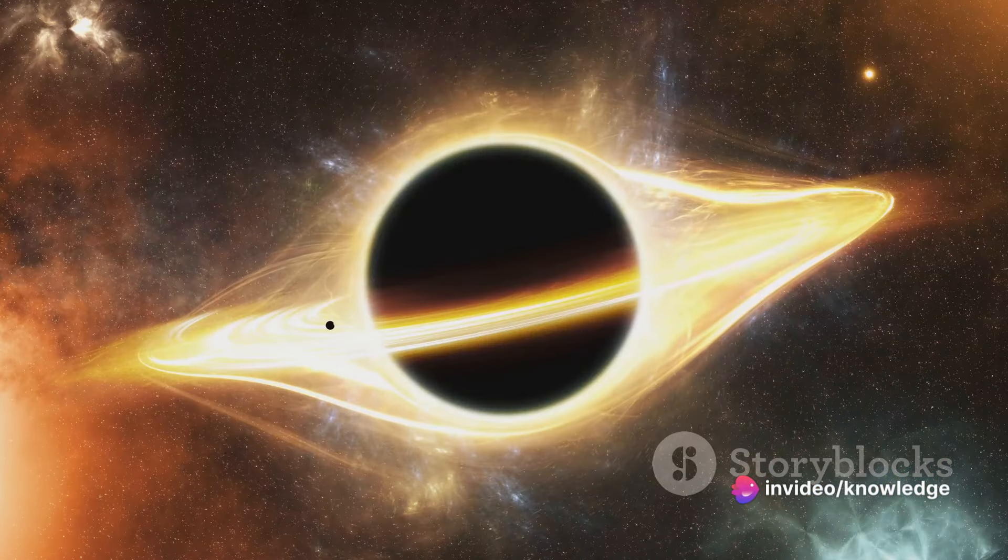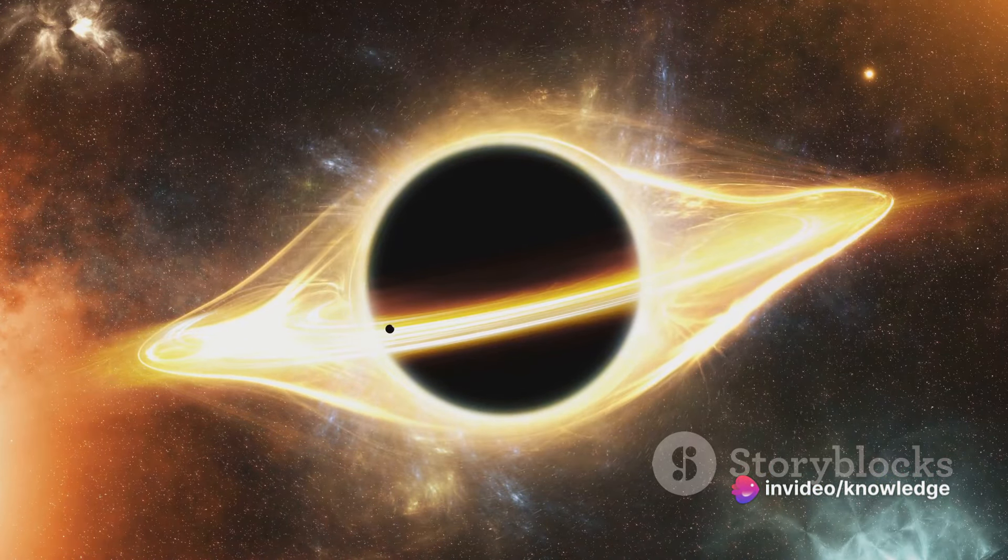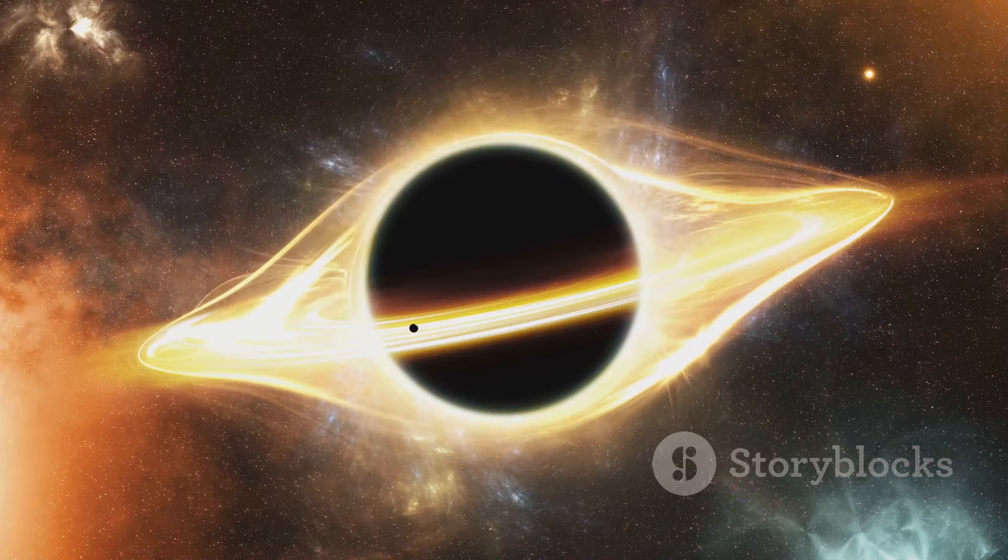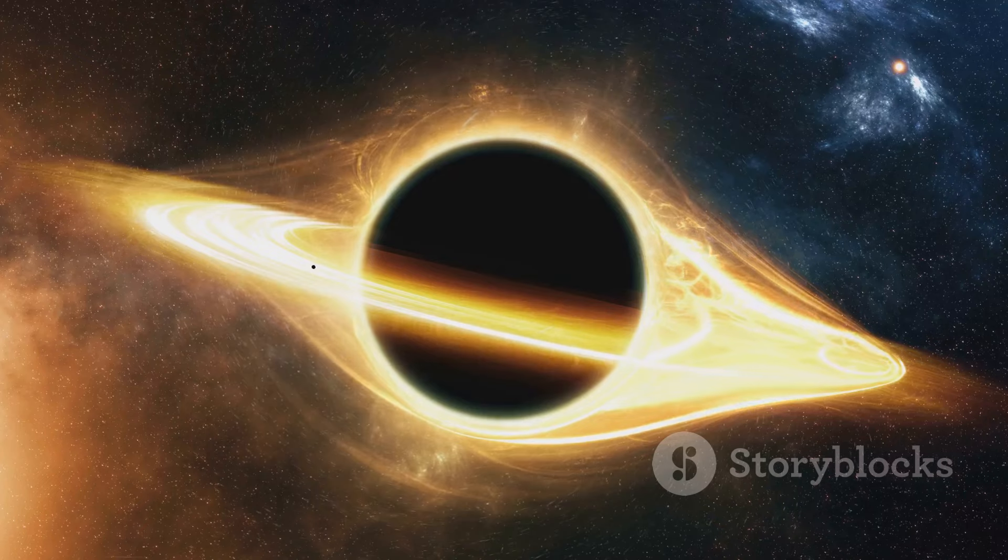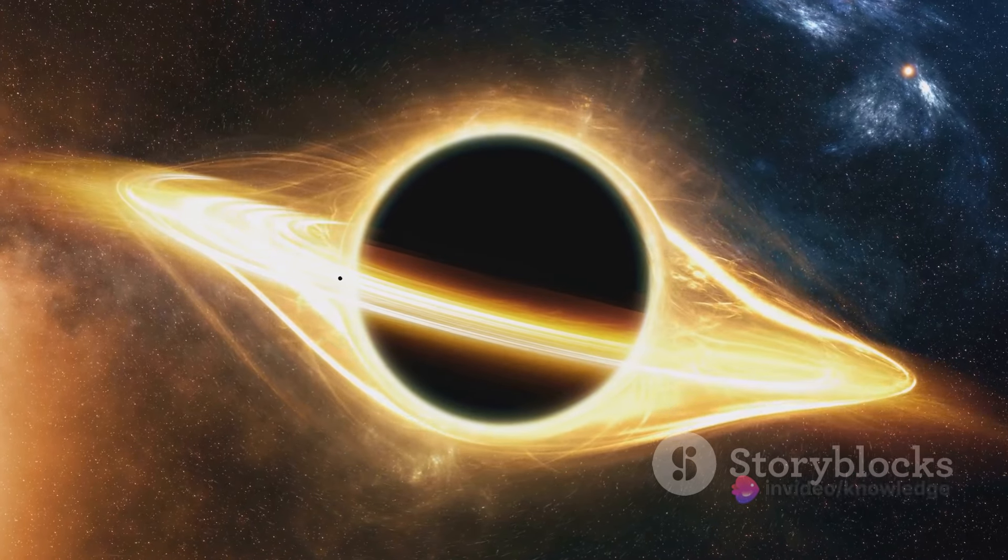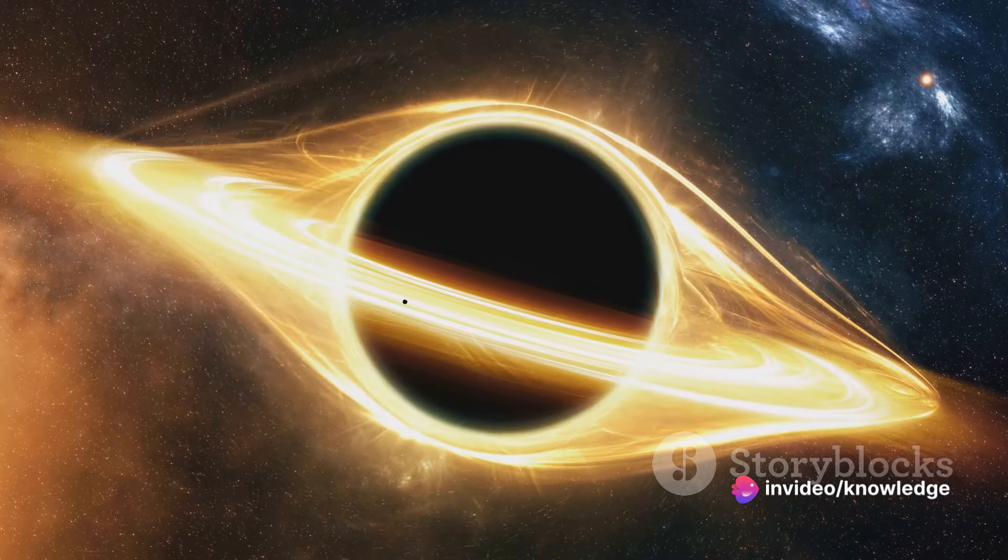What happens next is a titanic battle between gravity trying to crush the star and the pressure from the star's own heat trying to push outwards. This battle can't go on forever and eventually, gravity wins. The star collapses under its own weight and in a matter of seconds, a black hole is born.